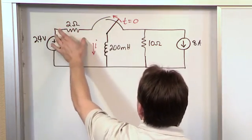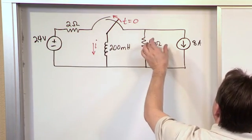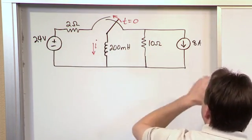So you have 24 volts over here, 2 ohms, 200 millihenries, 10 ohms, and 8 amps over here.